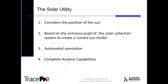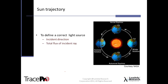With geometry and surface properties set, we bring up the solar utility. The solar utility considers the position of the sun across your period, based on the entrance pupil of the solar collector system to create a sun model. You would typically place the entrance pupil at the 0,0,0 point and specify its size. It's an automated simulation — you specify the period and the program iterates until it gets to your last time period, keeping track of every single iteration with output for each one.